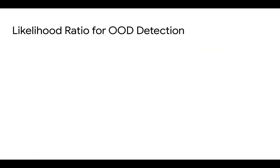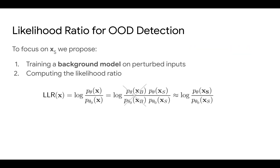So we propose a likelihood ratio method. We train a background model on perturbed inputs. The right amount of perturbation can corrupt the semantic structure in the data and capture only the background.